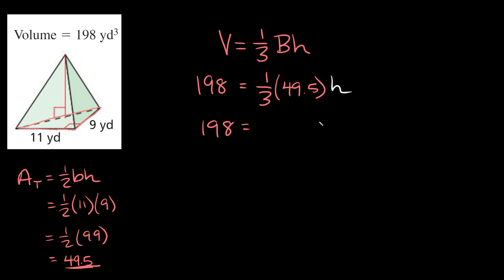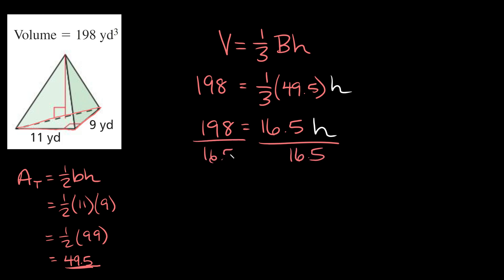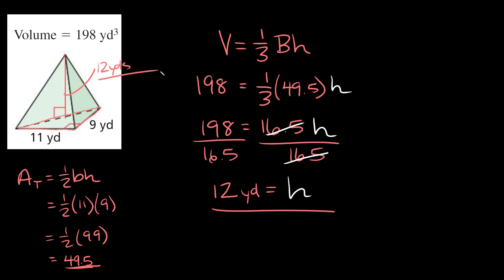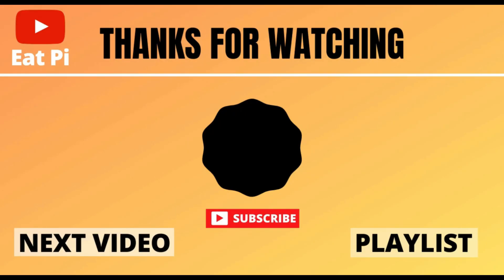So we get 198 is equal to 49.5 divided by three, which equals 16.5, times H. Lastly, we divide both sides by 16.5, and H is equal to 198 divided by 16.5, which equals 12. Our units are yards, so the height of this pyramid is 12 yards. If you found the video helpful, make sure to leave a thumbs up, and if you have any questions, let me know in the comments section below.